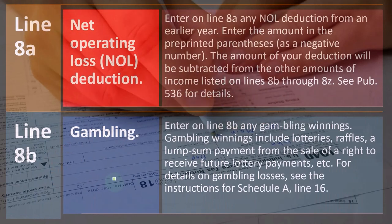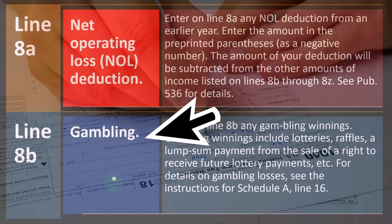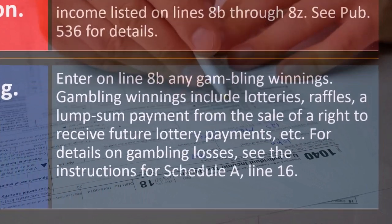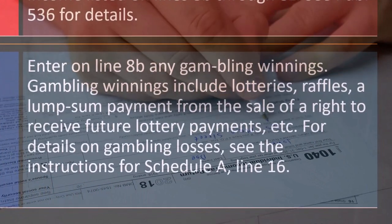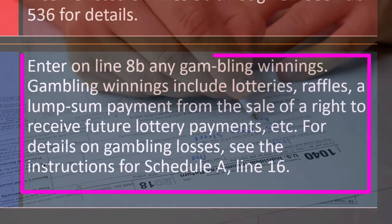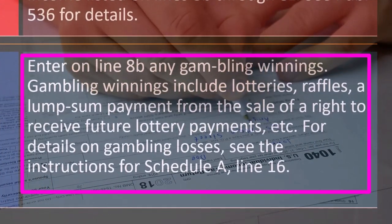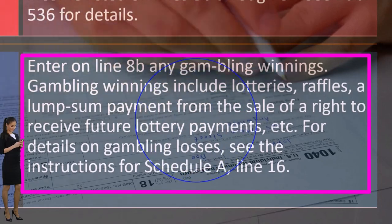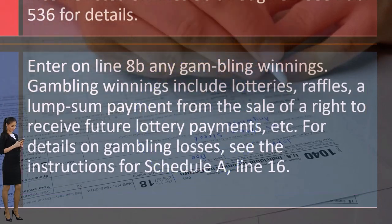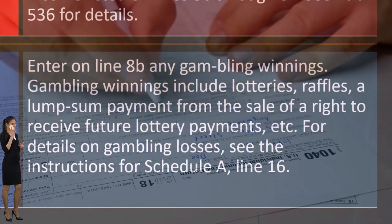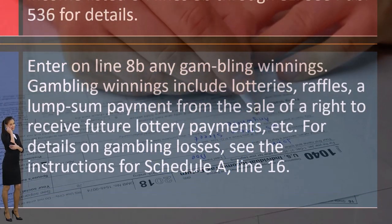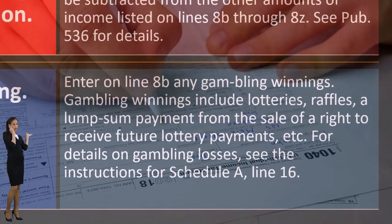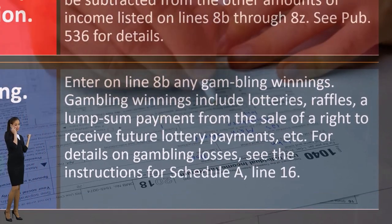Line 8B, gambling. Enter on line 8B any gambling winnings. Gambling winnings include lotteries, raffles, a lump sum payment from the sale of a right to receive future lottery payments, etc. For details on gambling losses, see the instructions for Schedule A, line 16.